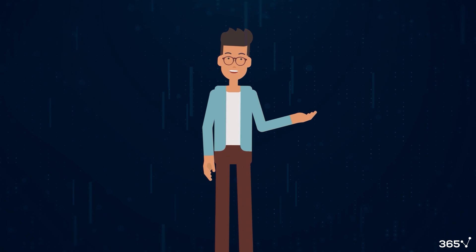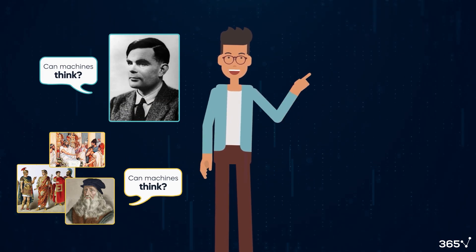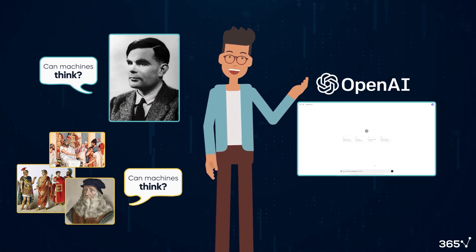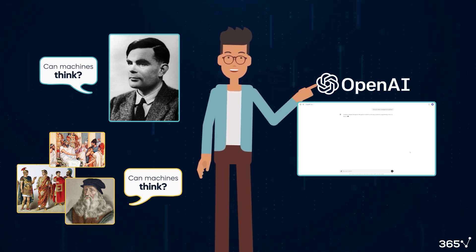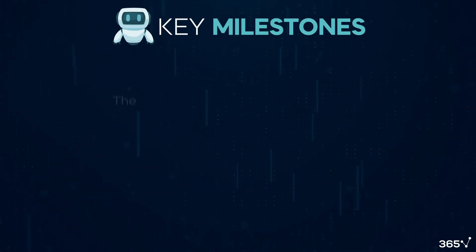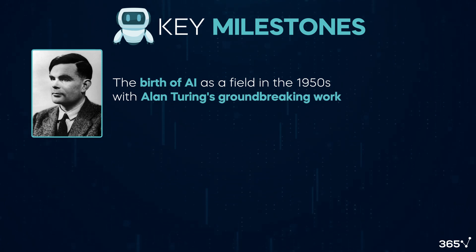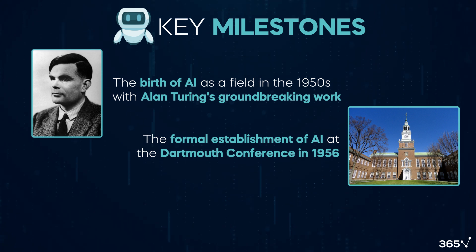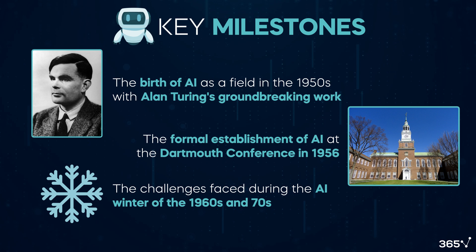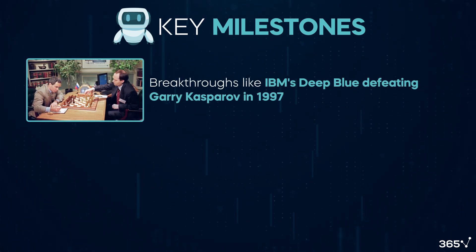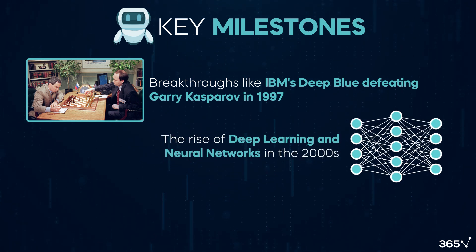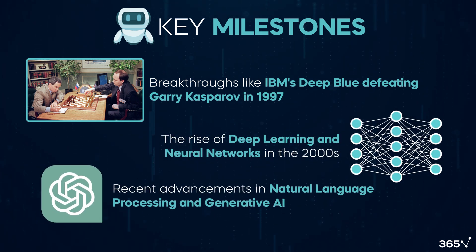The field of AI has truly come a long way, evolving from theoretical concepts to practical applications that are changing our world. As we conclude our journey through AI history, let's recap the key milestones we've covered: the birth of AI as a field in the 1950s with Alan Turing's groundbreaking work; the formal establishment of AI at the Dartmouth Conference in 1956; the challenges faced during the AI winter of the 1960s and 70s; breakthroughs like IBM's Deep Blue defeating Garry Kasparov in 1997; the rise of deep learning and neural networks in the 2000s; and recent advancements in natural language processing and generative AI.